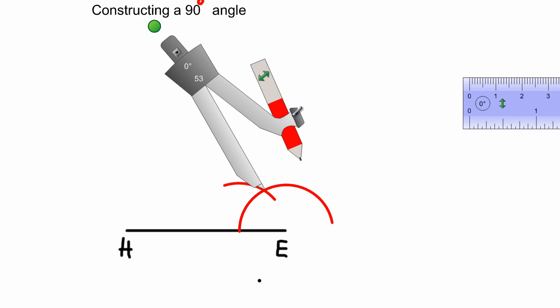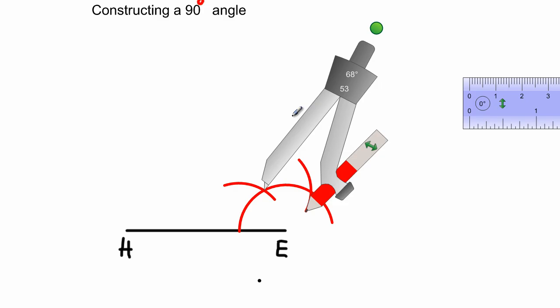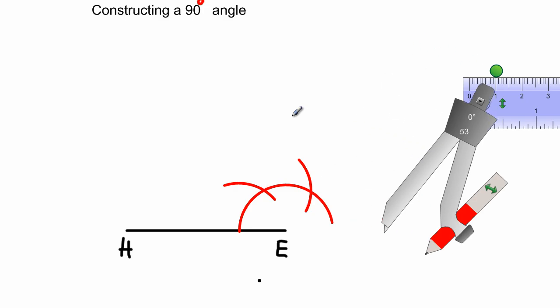From previous lessons we would have known that by putting the compass here, the point of the compass, you're swinging an arc. This angle here from this first arc to the line segment H E is a 60 degree angle, and another 60 is formed between these two arcs.